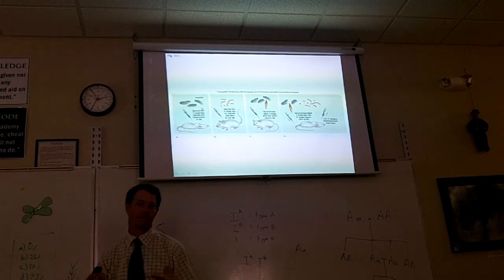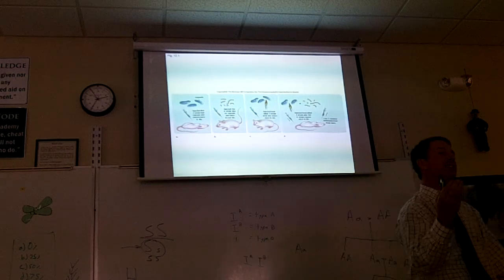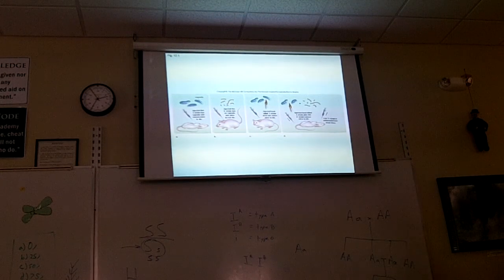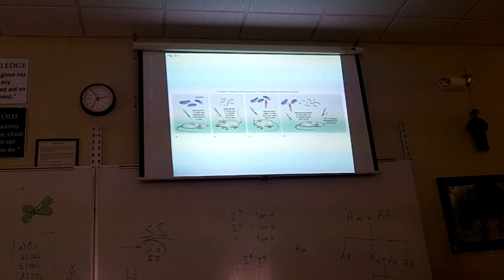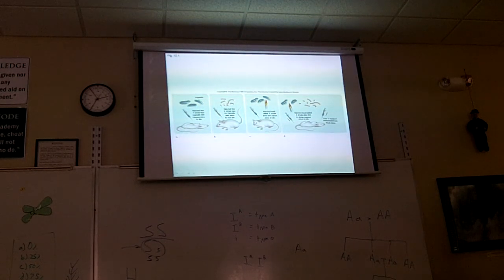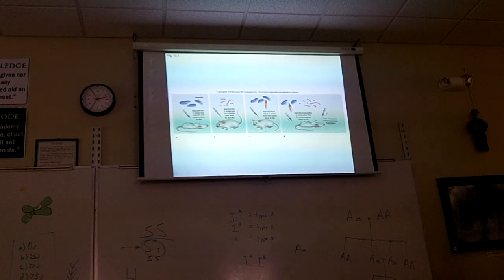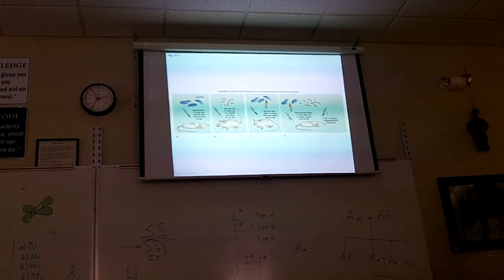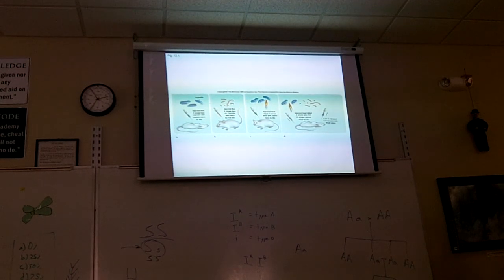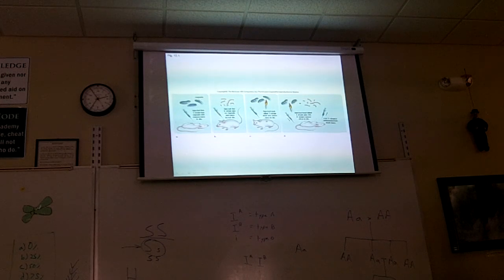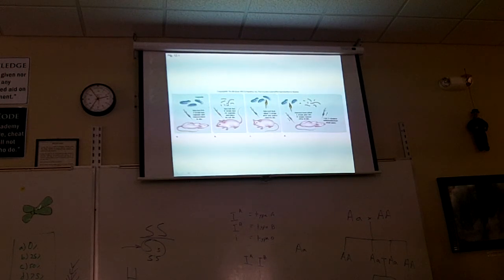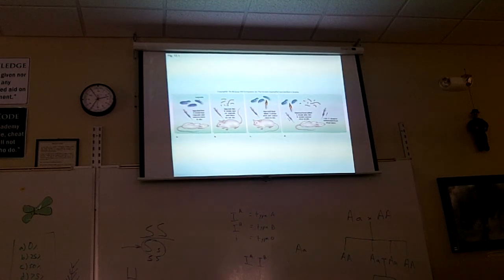So the R-strain brought it back to life? That's one conclusion, but that's not the conclusion he made. The conclusion he made was there must be a substance that moved from the dead S-strain bacteria into the live R-strain bacteria and caused the R-strain bacteria to be able to make that smooth capsule. And that's what killed the mice.